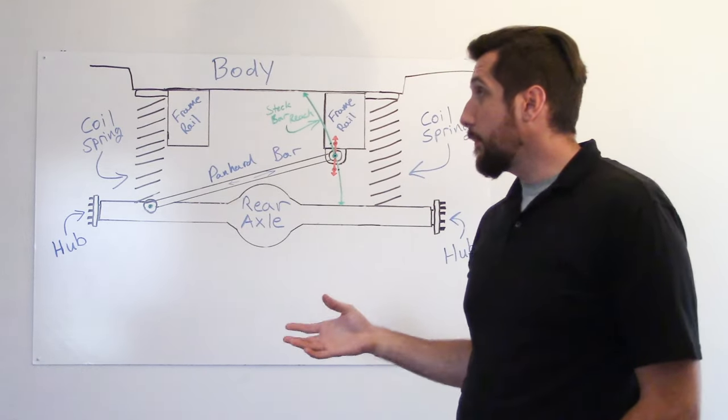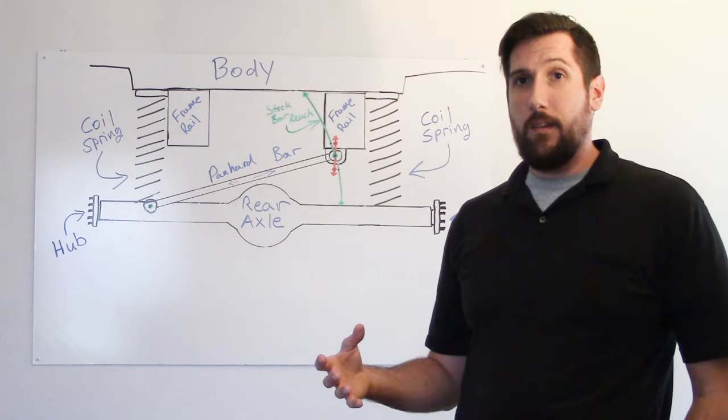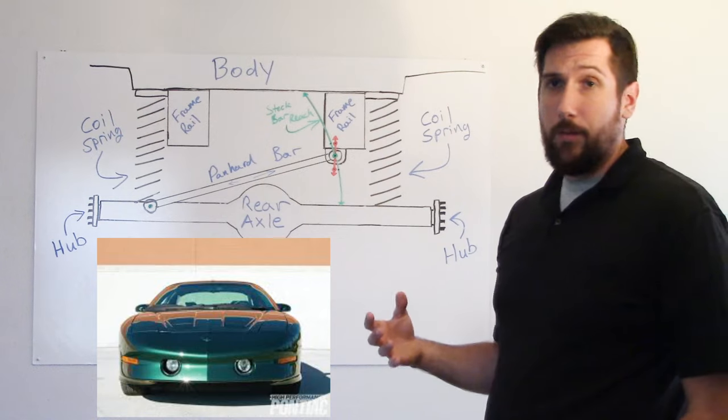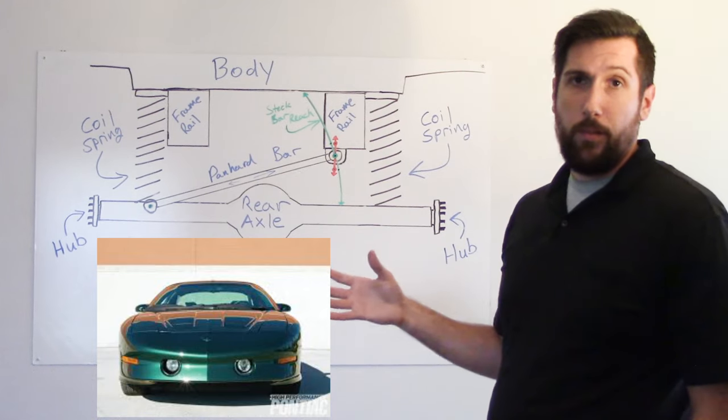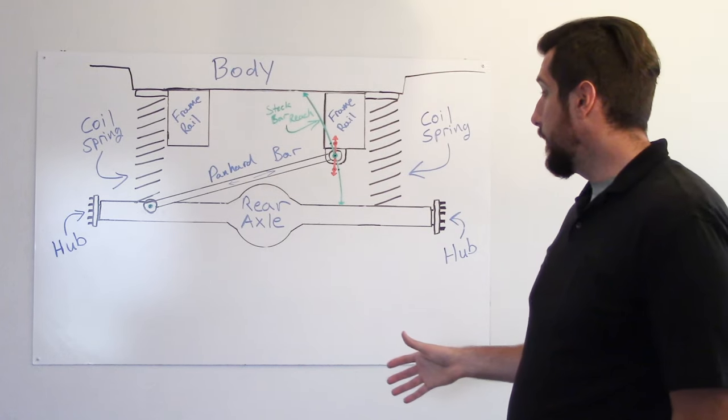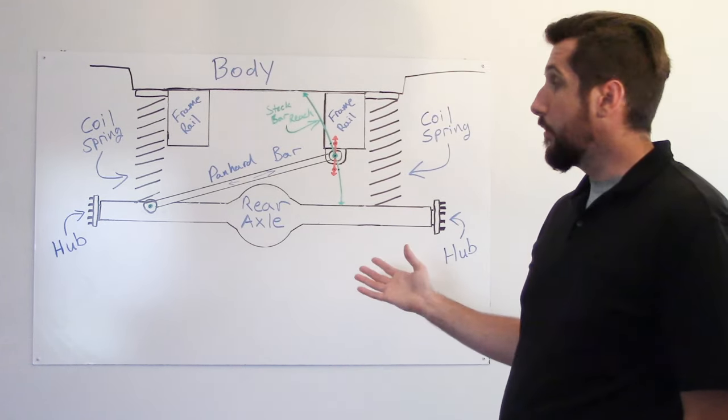It's actually a really similar suspension setup to the old F-body cars, the 93-02 Trans Ams, Firebirds, and Camaros, so the same principles will apply here on that as well. So the diagram is pretty simple, it's all labeled, but I'm going to go over it anyway.